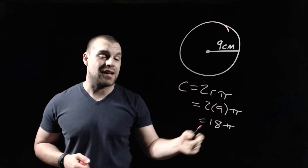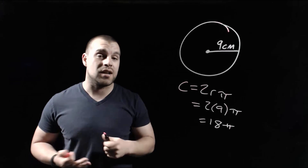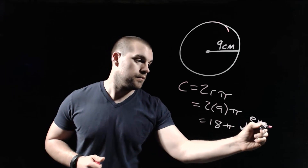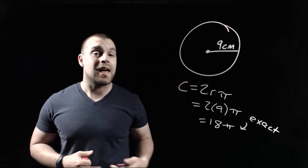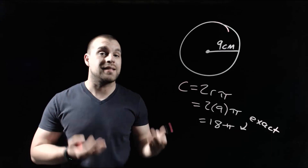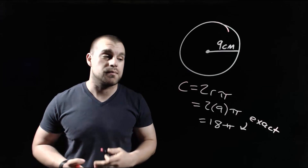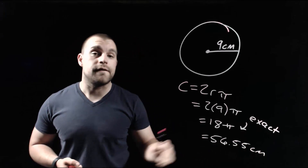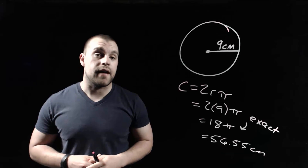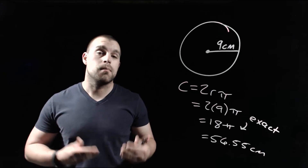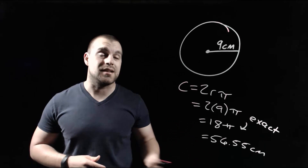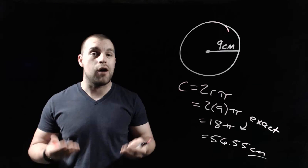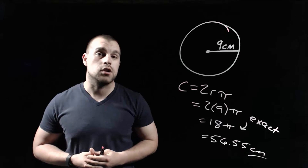Now 18π is called an exact answer, where we don't have any decimals on the end. But if we were to take that and type it into our calculator and get a decimal approximation, we would get 56.55 centimeters. Since we're measuring a distance — a length around the outside of the circle — we should include the label for how far this actually is.